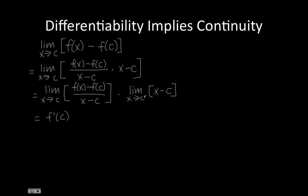And when x approaches c, we're going to get 0. So we know that the limit as x approaches c of f of x minus f of c equals 0.